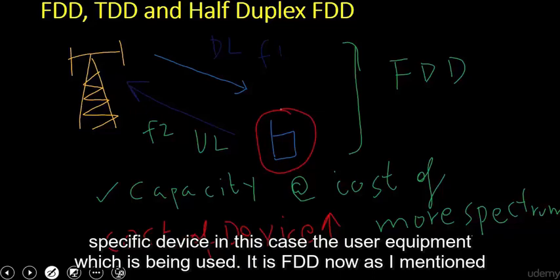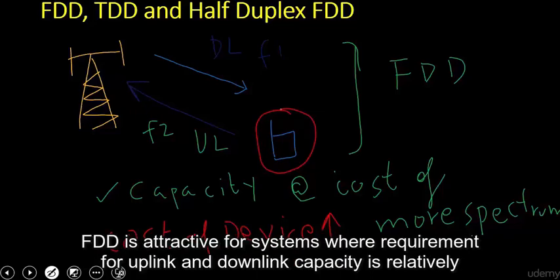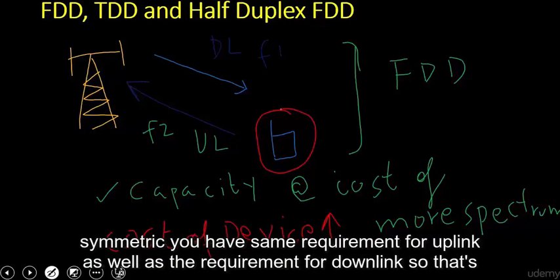FDD is attractive for systems where the requirement for uplink and downlink capacity is relatively symmetric — meaning you have the same requirement for uplink as well as for downlink.